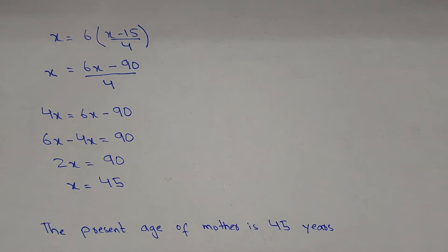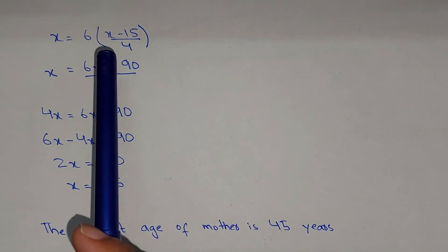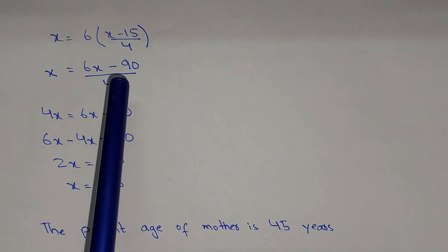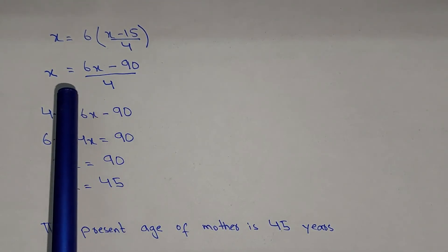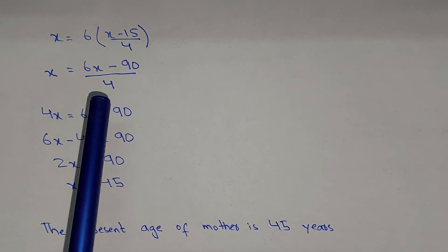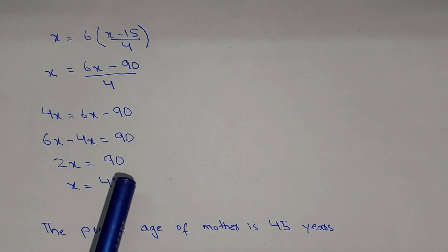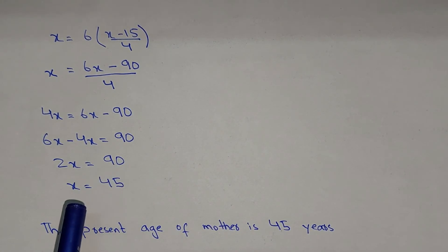Now we have to find the present age of the mother. We know x equals 6y, and y equals x minus 15 divided by 4. Substituting the value of y: x equals 6 into (x minus 15) divided by 4, which gives x equals 6x minus 90 divided by 4. Bringing 4 to the left-hand side: 4x equals 6x minus 90, so 6x minus 4x equals 2x equals 90, therefore x equals 90 divided by 2, which is 45.